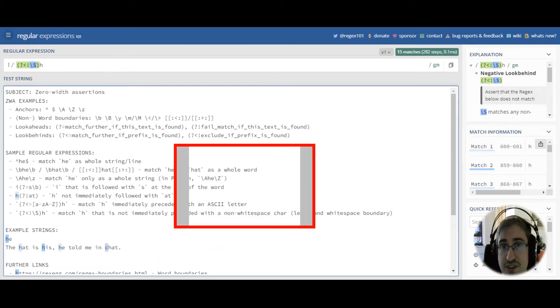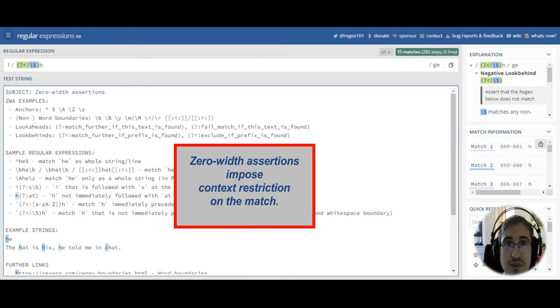So, you can see that with zero-width assertions, we impose some specific context on the match. This is very helpful, especially when you want to fetch some specific text without the text that was matched within the zero-width assertion.